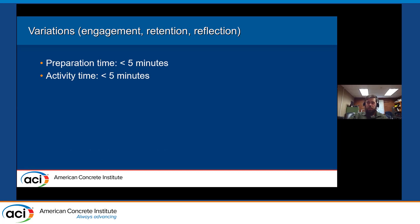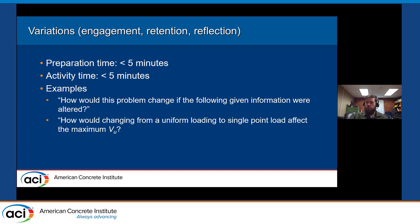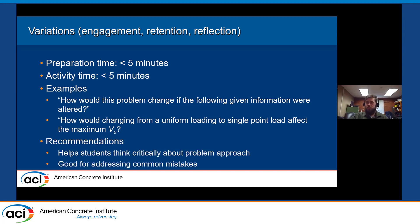Another good strategy is variations within content delivery — it doesn't take a lot of time to prepare or do in class. Good examples include asking 'how would this problem change if a specific piece of given information were altered?' or 'how would changing from a uniform loading to a single point load affect the maximum V_u?' This helps students think critically about how we approach an example problem and is a good way to address common mistakes by targeting specific items students tend to struggle with.